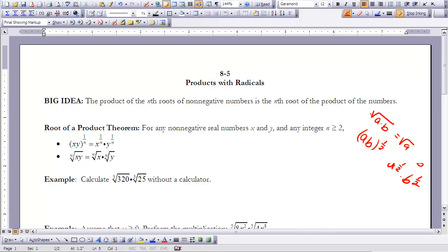Now, if we think about it like that, we get to the root of a product theorem. It says, for any non-negative real numbers x and y, and any integer n greater than or equal to 2, then xy raised to the power of 1 over n is the same as x to the 1 over n times y to the 1 over n.